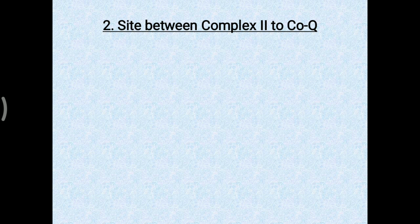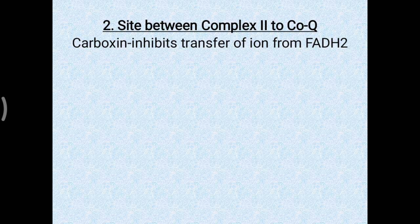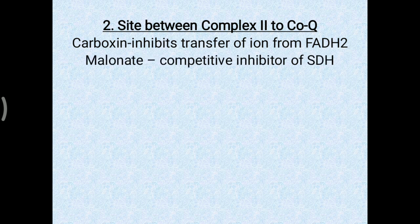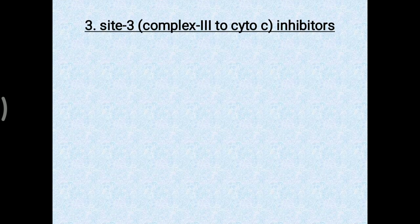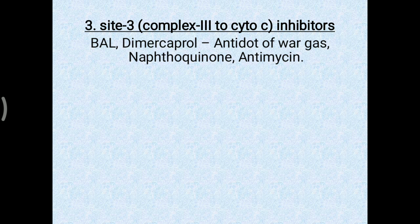Site 2 has two sub-categories: inhibitors between succinate and FADH2, and inhibitors between FADH2 and coenzyme Q. Carboxin specifically inhibits electron transfer from FADH2 to coenzyme Q, while malonate is a competitive inhibitor of succinate dehydrogenase, as discussed in the TCA cycle. Site 3 — between complex 3 and cytochrome C — is inhibited by British anti-lewisite (dimercaprol, an antidote for heavy metals), naphthoquinone, and antimycin A.